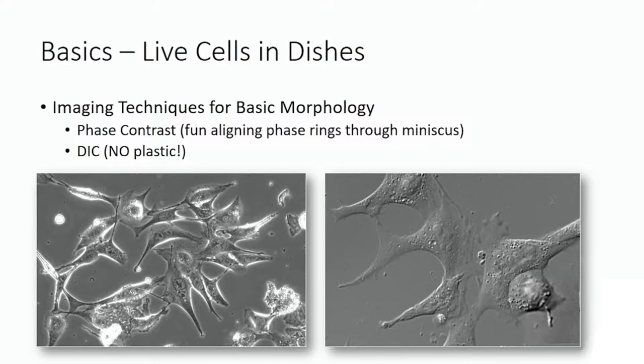If you've got live cells in dishes that are not stained and you want to look at them, phase contrast is the way of choice. But on my confocal scopes I don't have phase lenses — I have DIC lenses, so I can do it with DIC. But you can't do DIC through plastic. So if you've got a plastic lid, you can't do DIC — it won't work. You have to know that in advance.